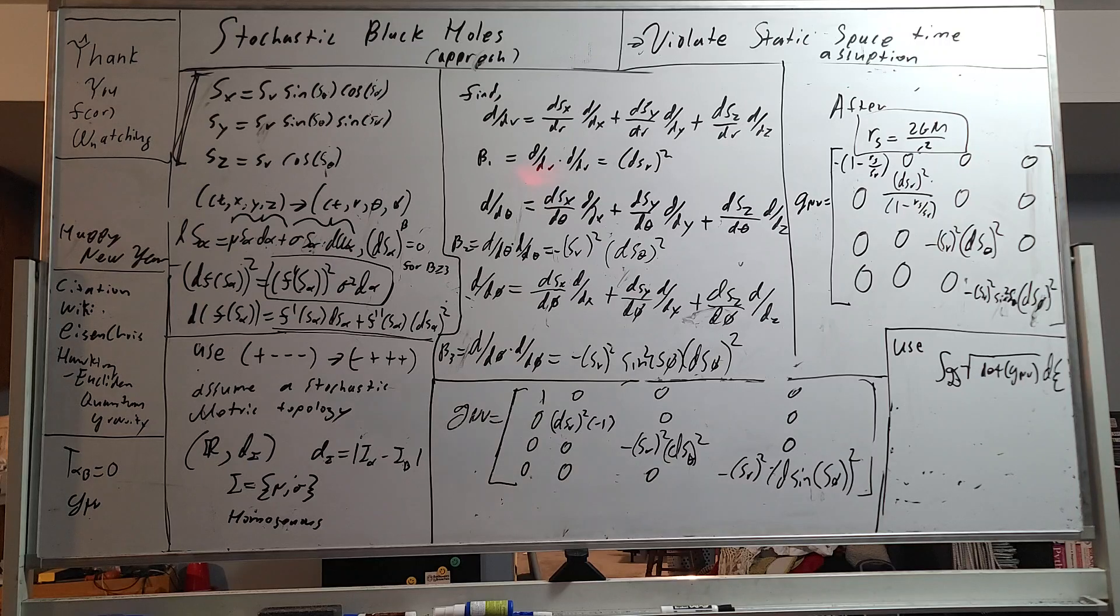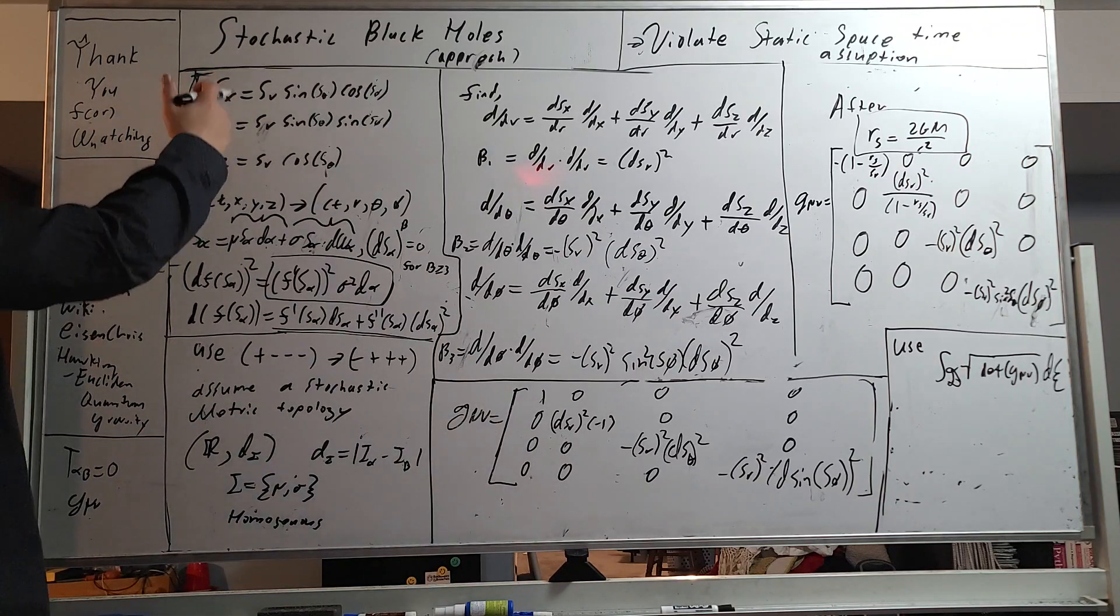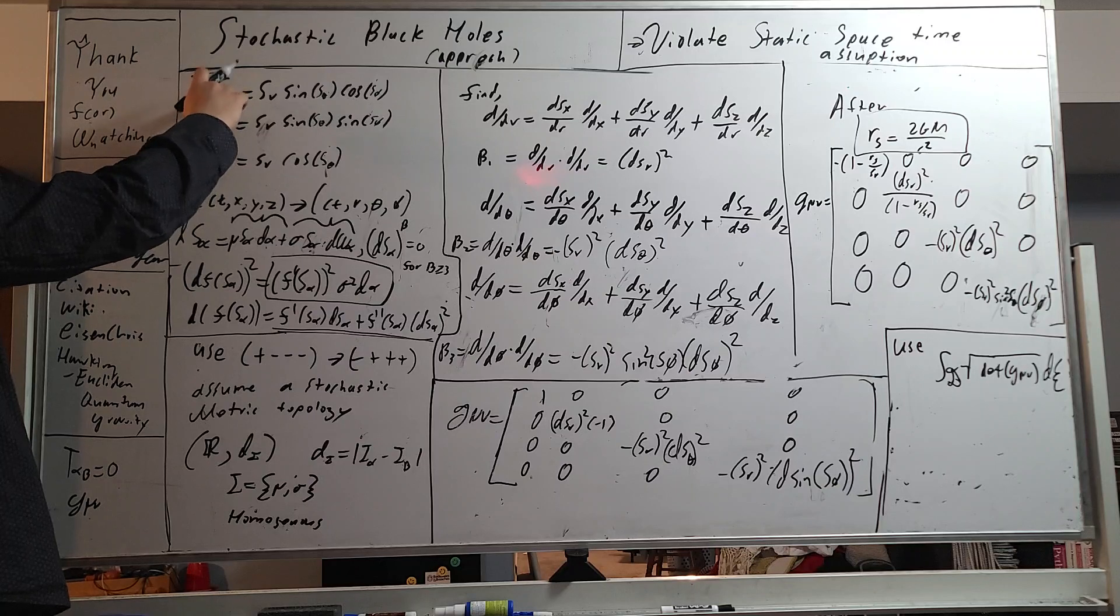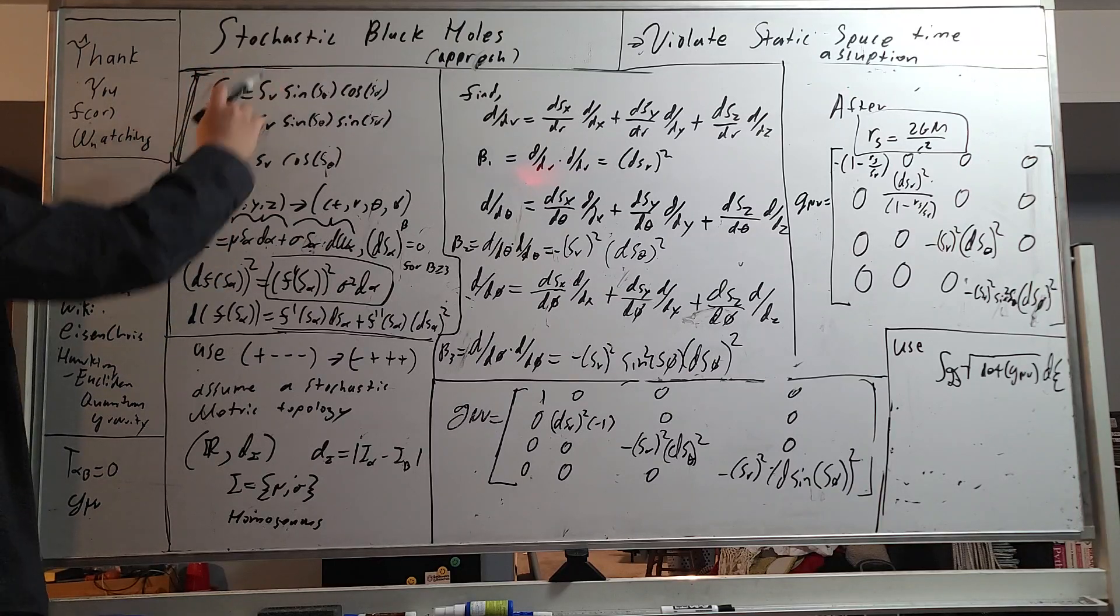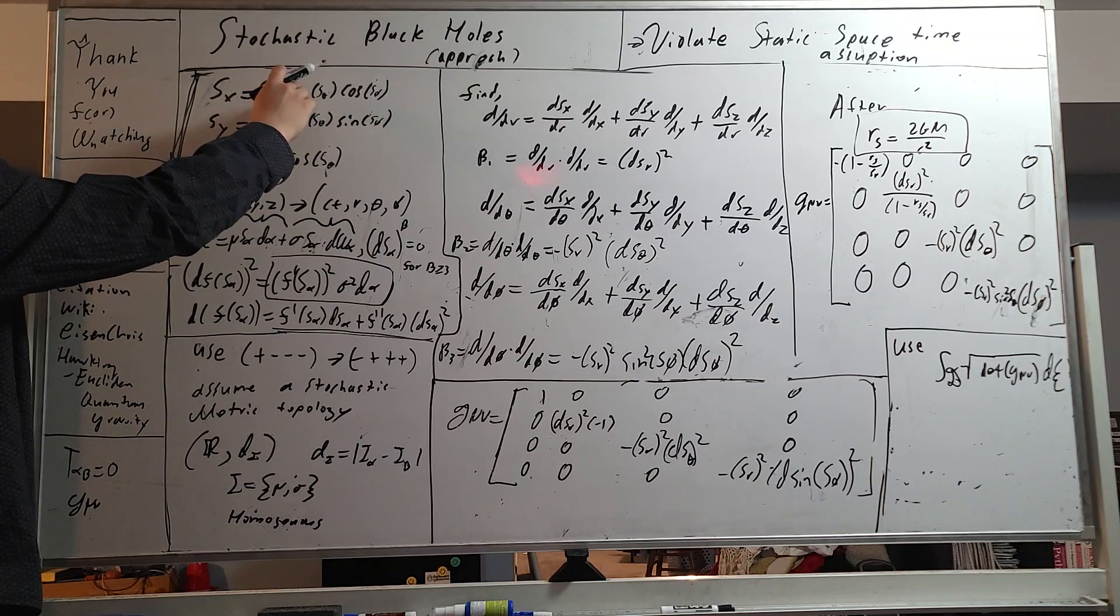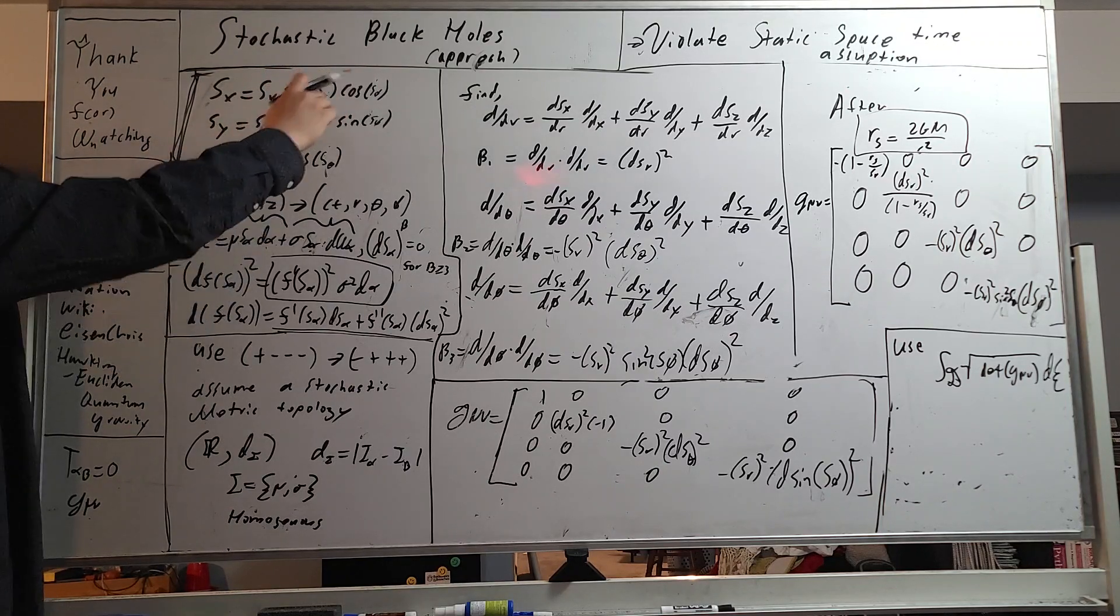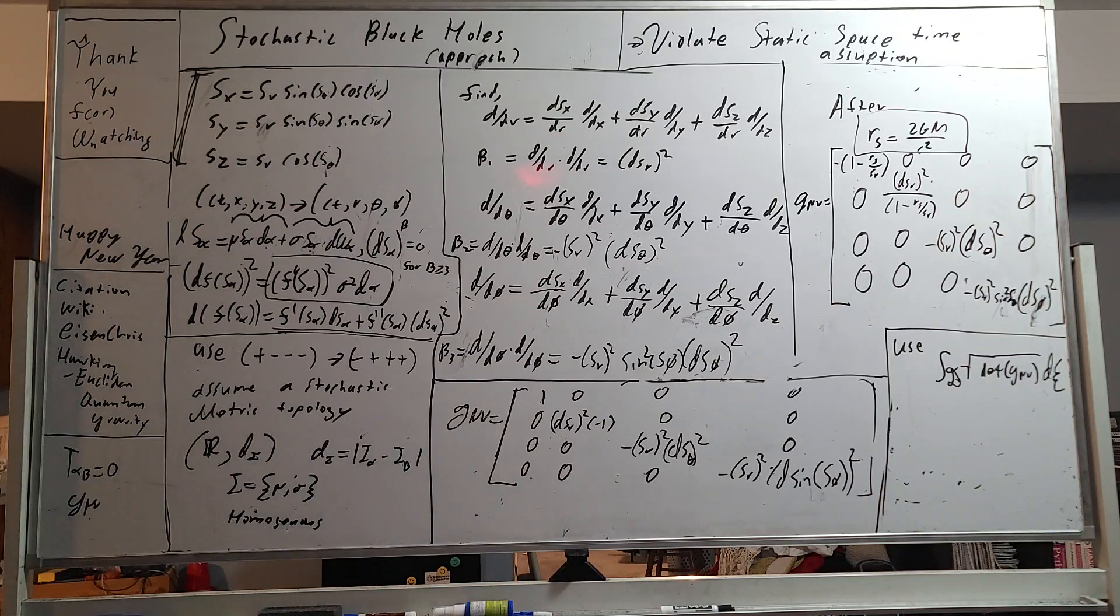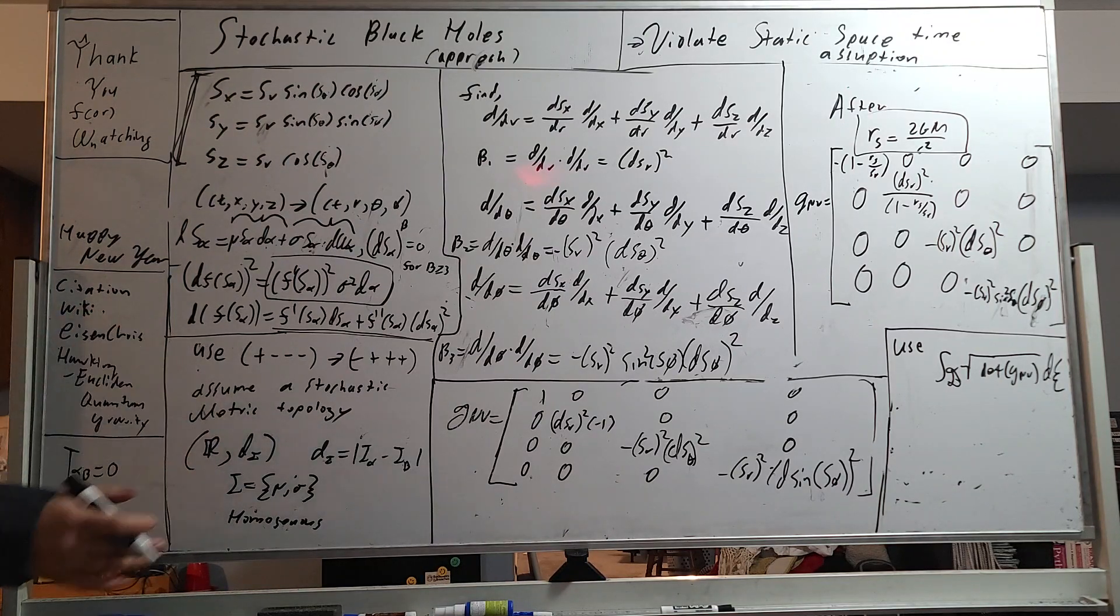And since we are doing this in stochastic calculus, what we're going to do is we're going to write every component as a stochastic process. So, S sub x, or the stochastic process of x, equals the stochastic process of the radius, times the stochastic process, or sine of the stochastic process of theta, so on and so forth.